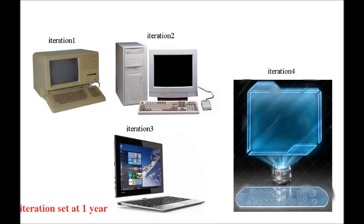Notice the physical changes of the computer as it evolves from one generation to the next. It starts as one big bulky machine. The next year, it separates into parts like a monitor, keyboard, mouse, and speakers. In the second year, it changes into a folding tablet — smaller and more powerful. After 3 years of evolution, the computer transforms into a tiny cube with no physical monitor or keyboard, using holographic projections and pressure technology to replace bulky hardware.